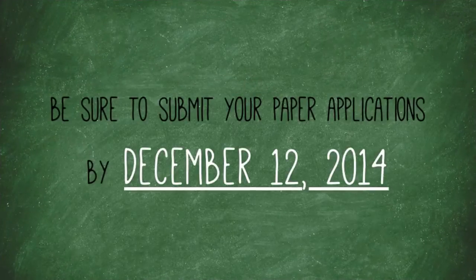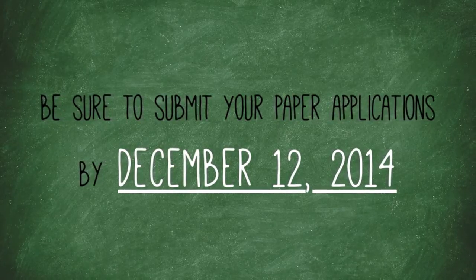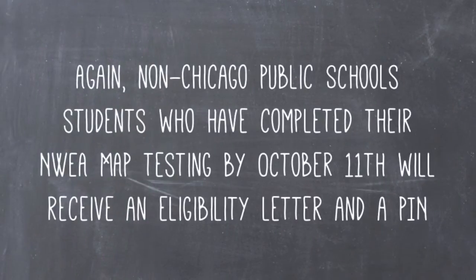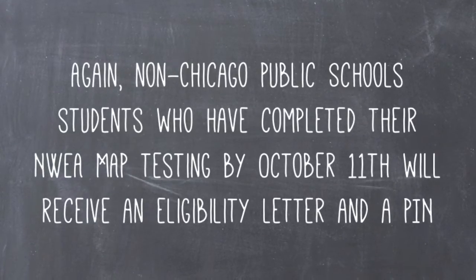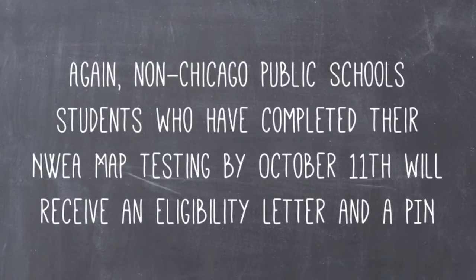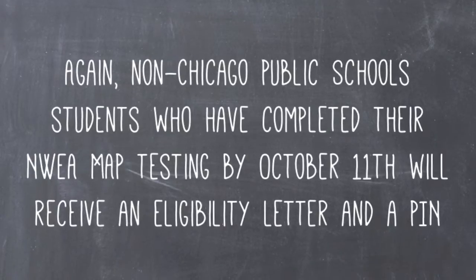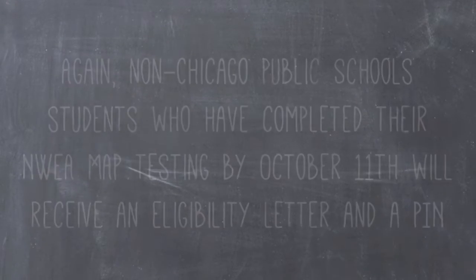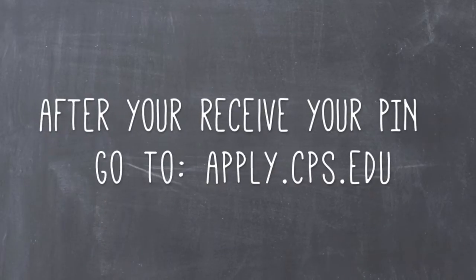Be sure to submit your paper applications by December 12, 2014. Again, non-Chicago public school students who have completed their NWEA MAP testing by October 11 will receive an eligibility letter and a PIN. After you receive your letter and PIN, go to apply.cps.edu and click Step 1.